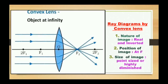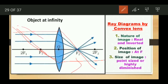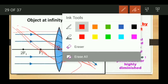Before beginning the ray diagrams for convex lenses, I would like you to remember and practice all three rules which we learnt in the previous video. Those three rules will be helpful in drawing ray diagrams for both lenses. Let me recap: first, any ray of light parallel to the principal axis after refraction will pass through the focus. Second, any ray of light passing through the principal focus will pass parallel to the principal axis after refraction. Third, any ray of light passing through the optical center of the convex lens will go undeviated.